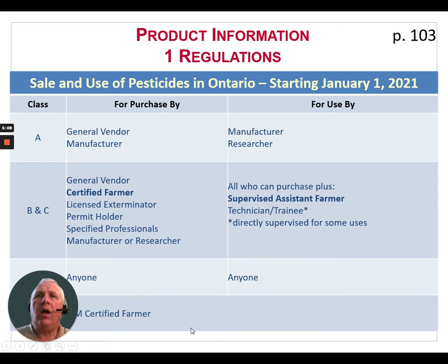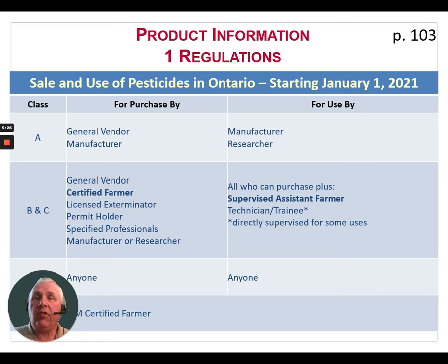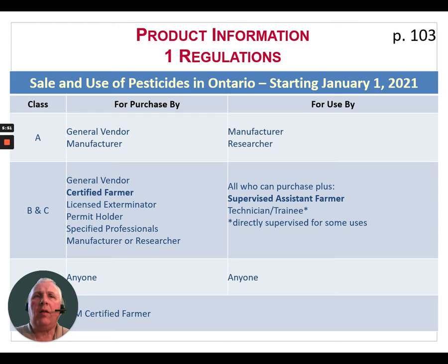This chart shows who can buy and use these products. Class A products can be purchased by a general vendor or manufacturer and used by manufacturers and/or researchers. Class B and C can be purchased by general vendors, certified farmers, licensed exterminators, permit holders, specified professionals, manufacturers, or researchers. Who can use them includes that same list plus supervised assistant farmers or technicians and trainees under direct supervision. Class D products can be purchased and used by anyone.